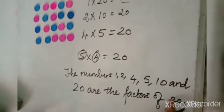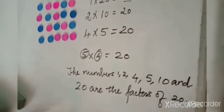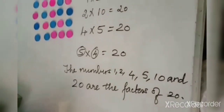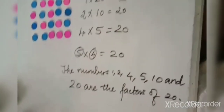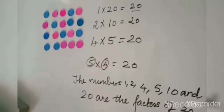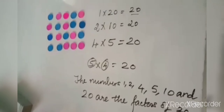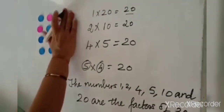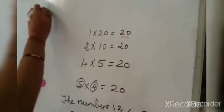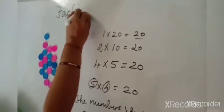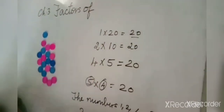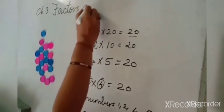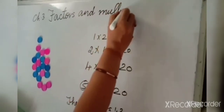So students, what do you mean by factors? A factor is a smaller number that divides the given number completely without leaving any remainder. That is what we are going to learn today in our chapter — how to find the factors and multiples of a given number in Chapter 3: Factors and Multiples.